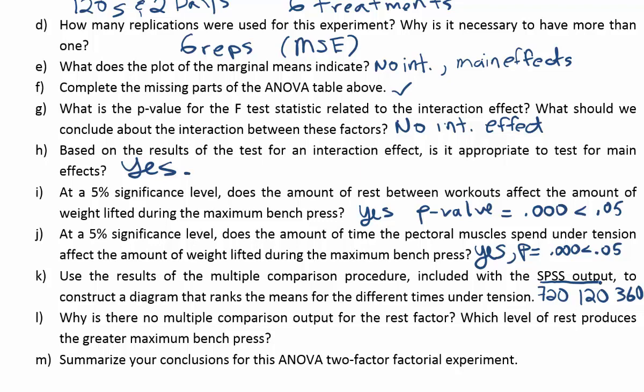Part L asks why there is no multiple comparison output for the rest factor and which level produces greater bench press. Since there are only two factor levels for rest, if the main effect is significant we simply look at which sample mean is higher — no multiple comparisons are needed. From the marginal plots, four days of rest produced greater bench press than two days. So two days rest < four days rest. For part M, summarizing conclusions: there is no interaction effect, and both main effects are significant. The recommended treatment for gaining bench press strength would be 360 seconds under tension with four days of rest between workouts.